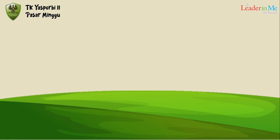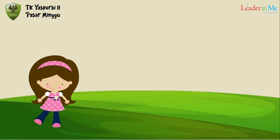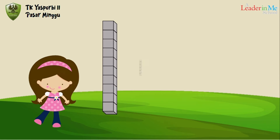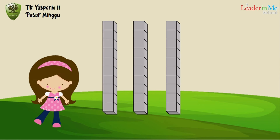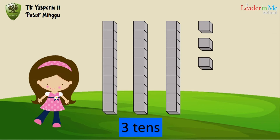Next, how many tens? One, two, three — three tens. And how many ones? One, two, three — three ones. Three tens and three ones equals thirty-three.